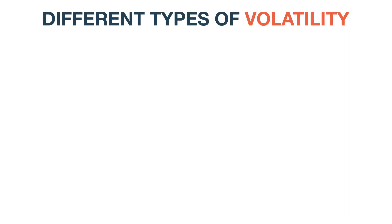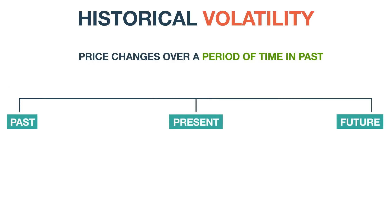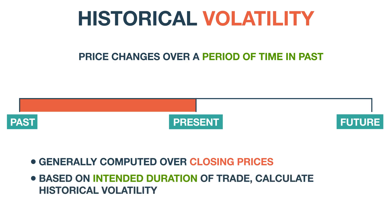Now that we have understood the essence of volatility, let us look at its different types. Historical volatility gauges the fluctuations of underlying securities by measuring the price changes over a predetermined period of time in the past. The calculation can also be done on an intraday basis, but this process is generally done over the closing prices of securities. Based on the intended duration of the options trade, one can calculate the historical volatility.